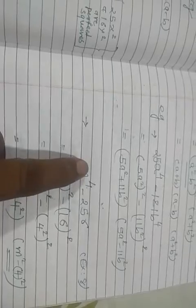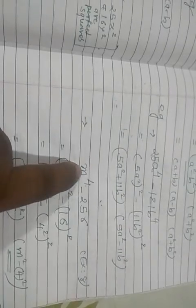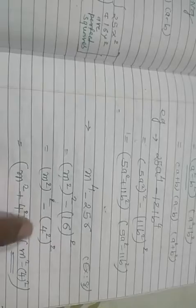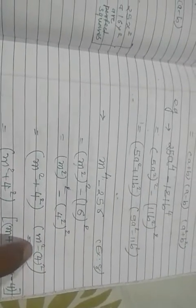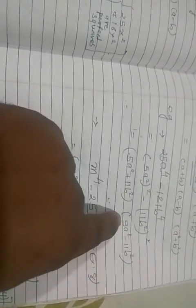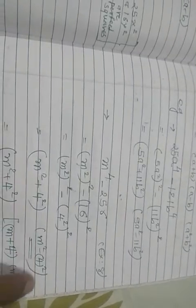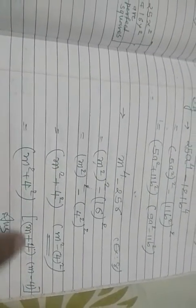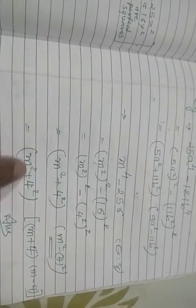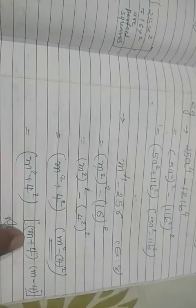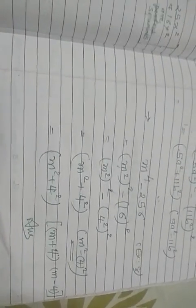Next one — yeh dekho, yeh bhi perfect square hai, yeh bhi perfect square hai — again it will work. Now here m⁴ minus b⁴ — yahan abhi bhi perfect square hai. But look at m² minus 4 square — to woh aapko again factorize karna padega. Yeh nahi hoga kyunki beech mein plus sign hai. So m² plus 16 remains as it is. And m² minus 16 = (m+4)(m-4). So this is the answer.